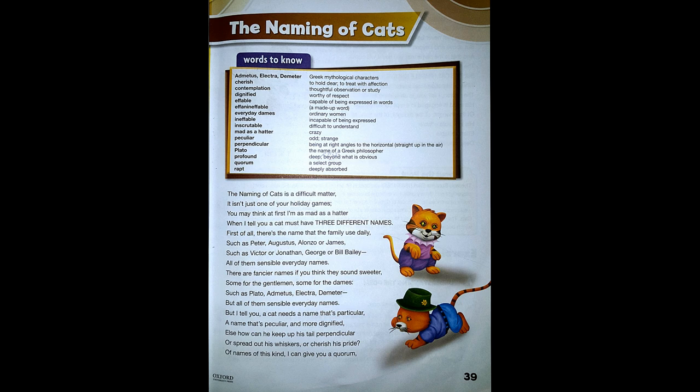Alonzo or James, such as Victor or Jonathan, George or Bill Bailey. All of them sensible everyday names. There are fancier names if you think they sound sweeter, some for the gentlemen, some for the dames, such as Plato, Admetus, Electra,